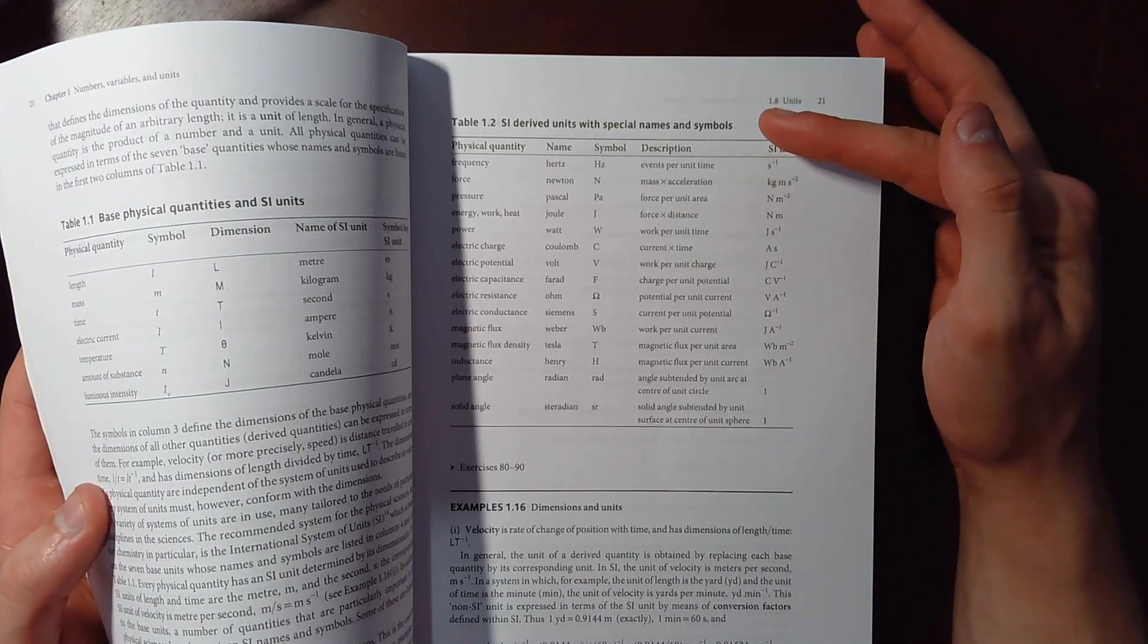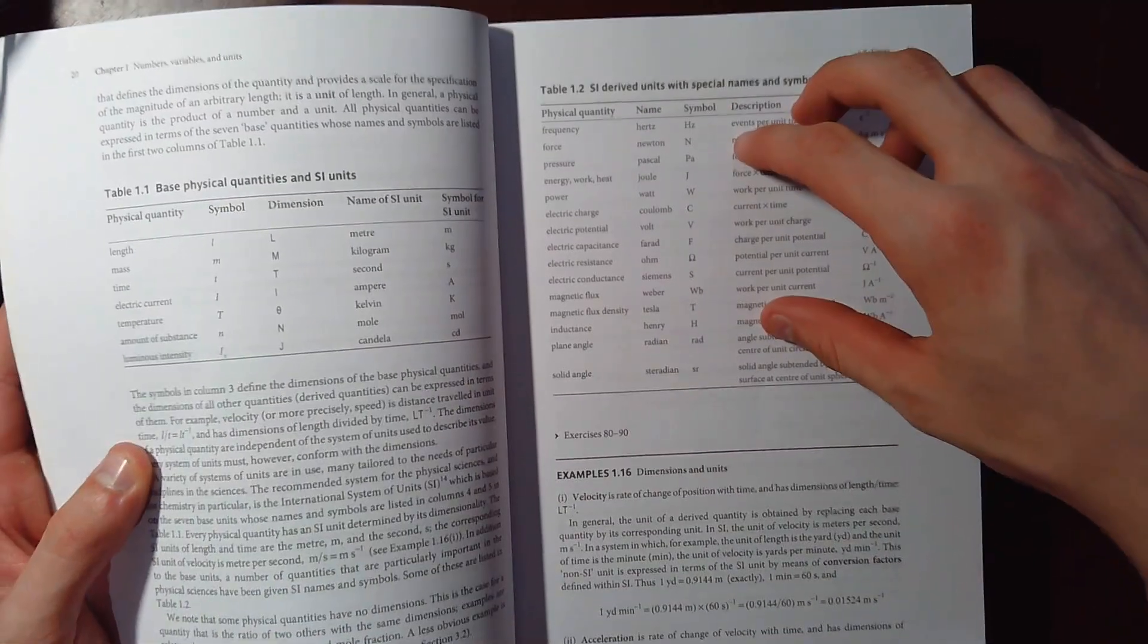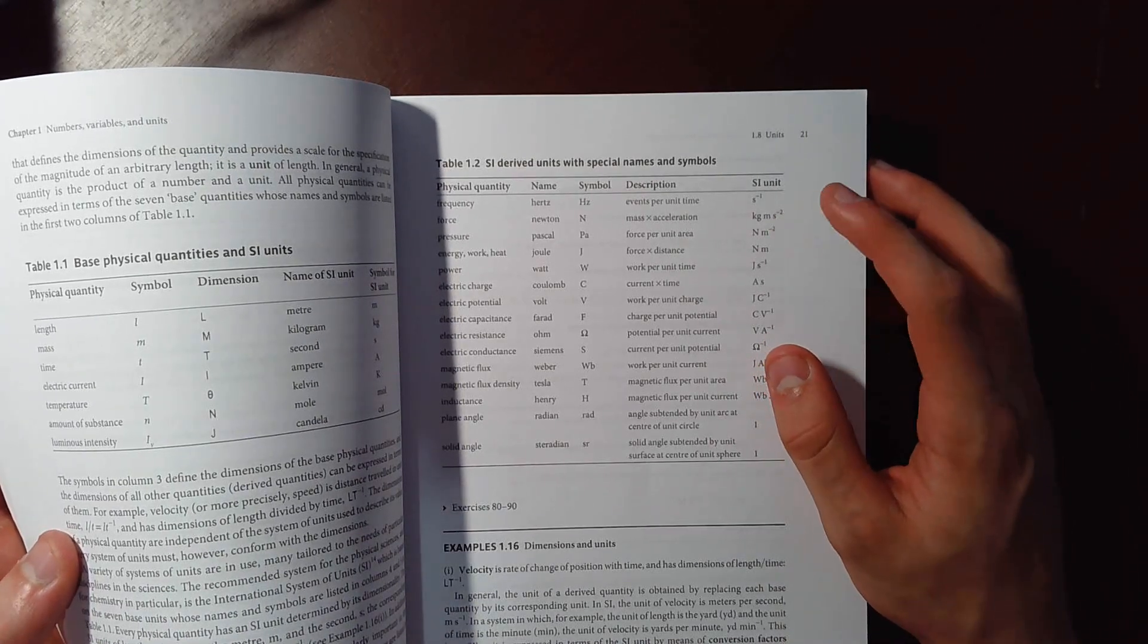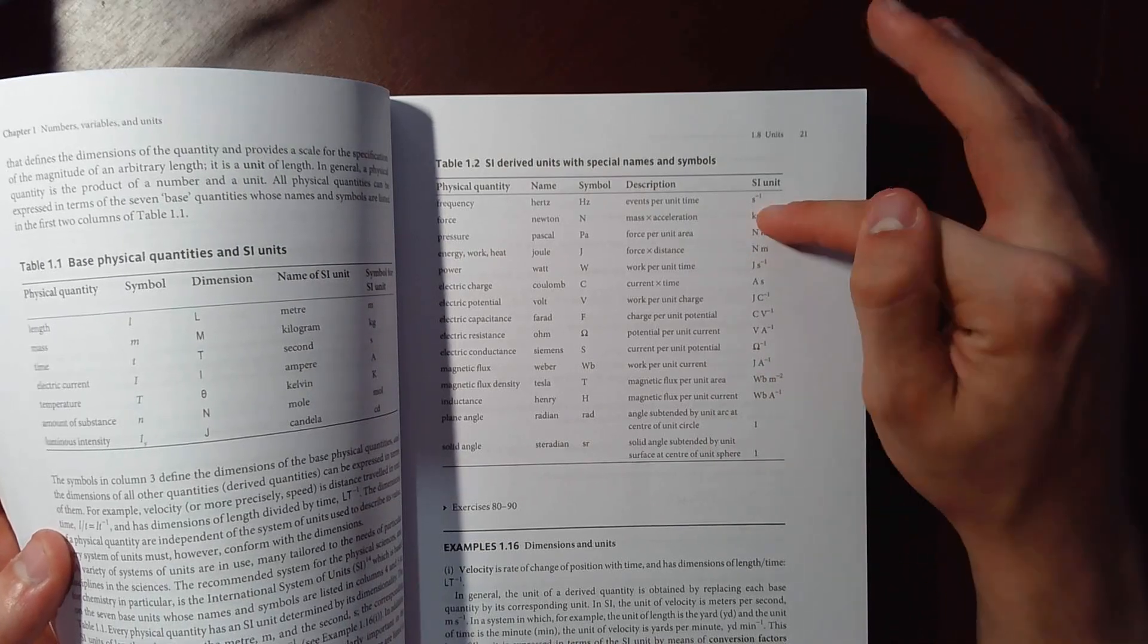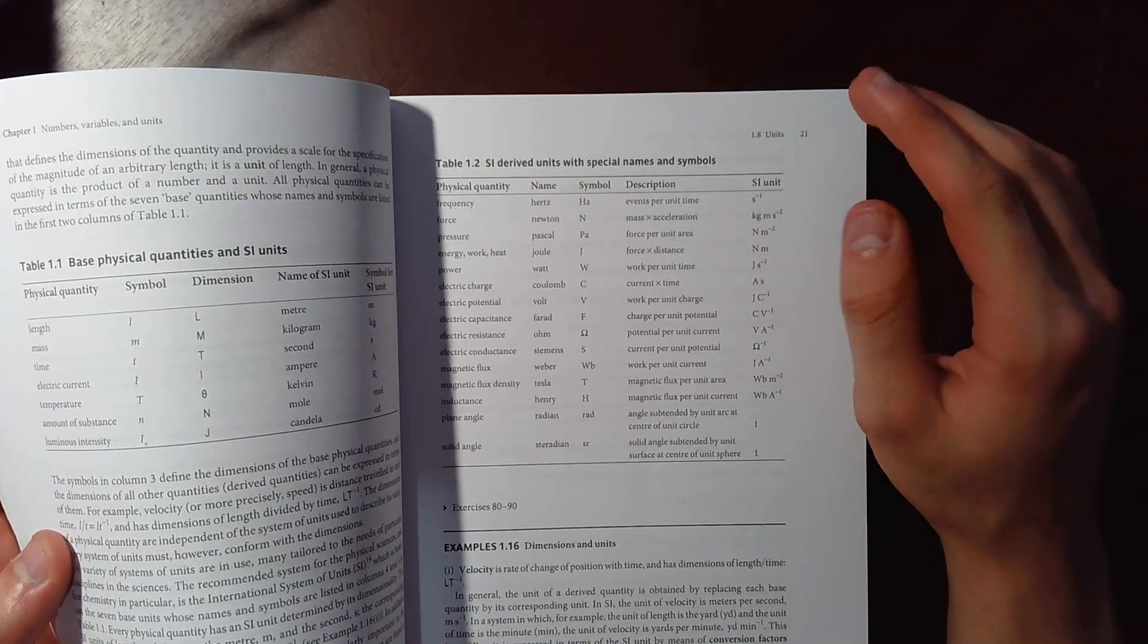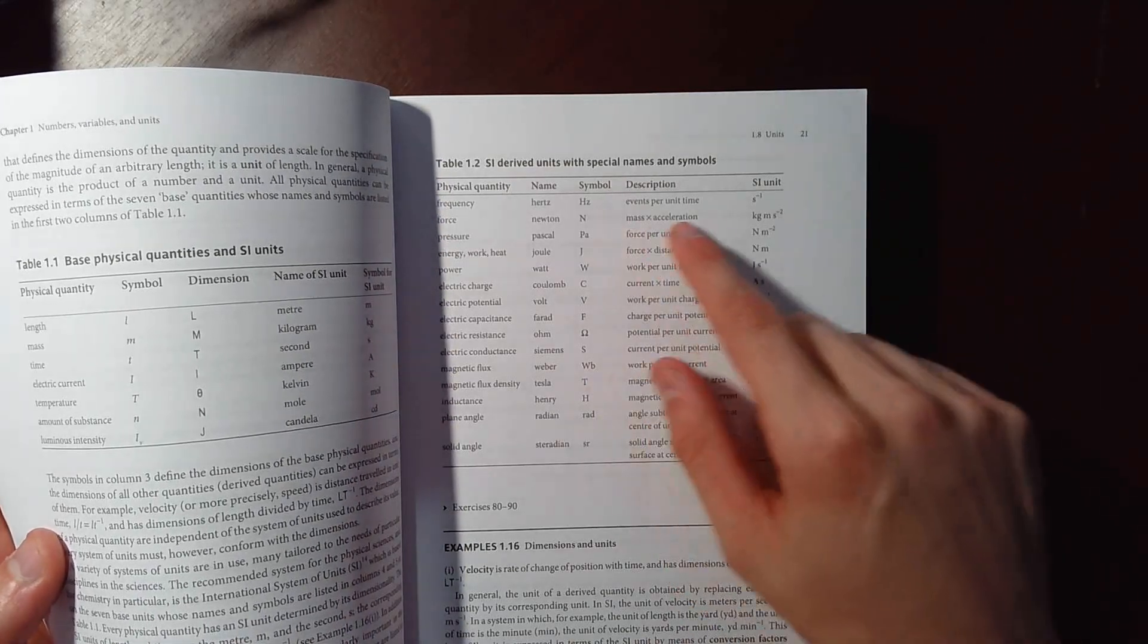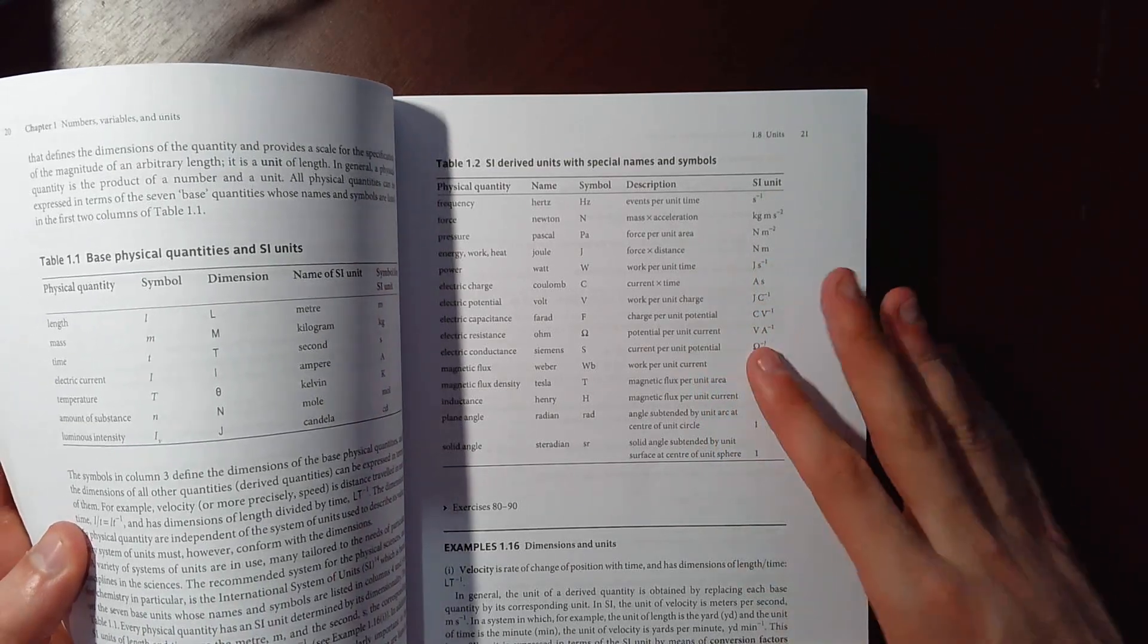It's even got tables with all the standard stuff like your units. It's got your derivation, so all of these units are basically comprised of these main units here. So if you see here, force, that's going to be kilograms meters per second per second. In other words, it's mass times acceleration and acceleration is meters per second per second.